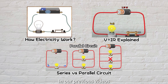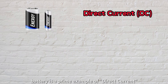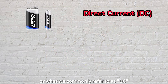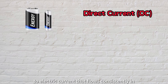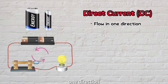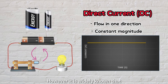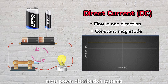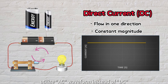In our previous videos, we often used batteries as the power source to illustrate various examples. A battery is a prime example of direct current, or what we commonly refer to as DC. When we talk about DC, it refers to electric current that flows consistently in one direction, maintaining a constant magnitude. However, it is widely known that most power distribution systems, as well as the electricity supply to our homes, utilize AC waveform instead of DC.